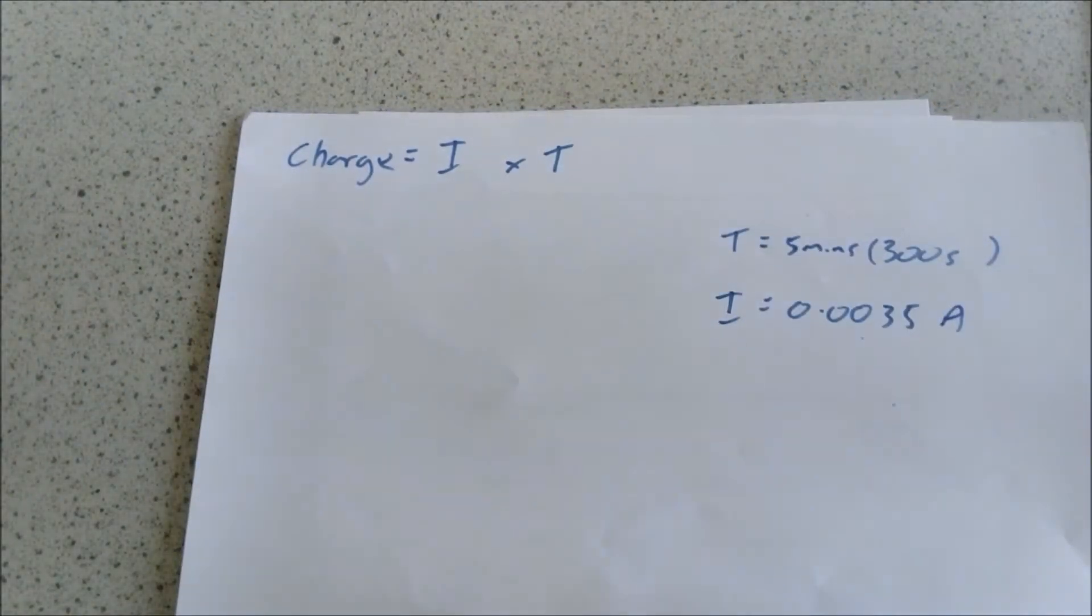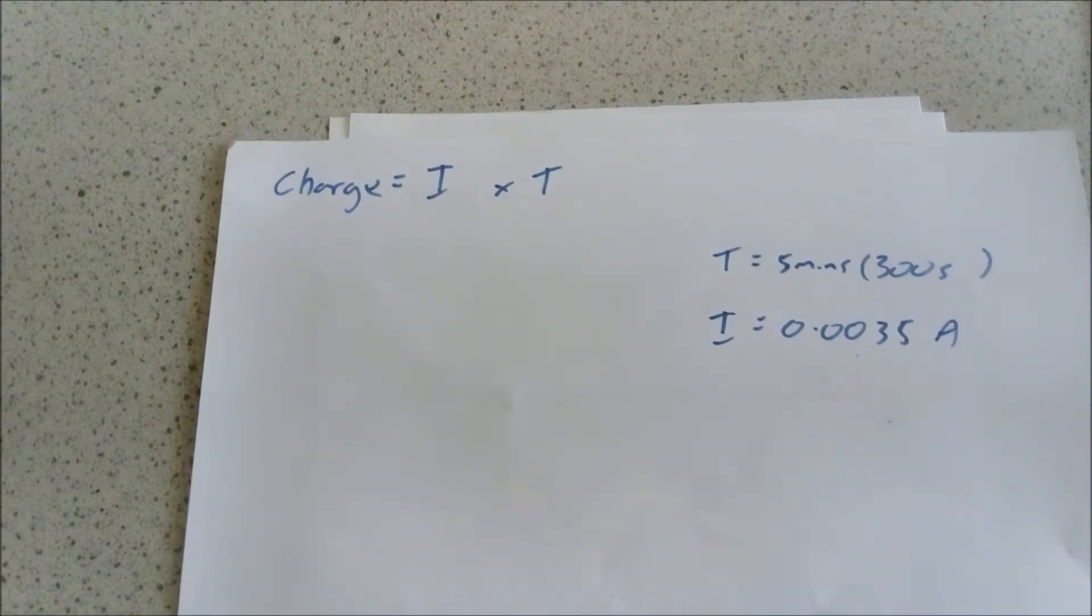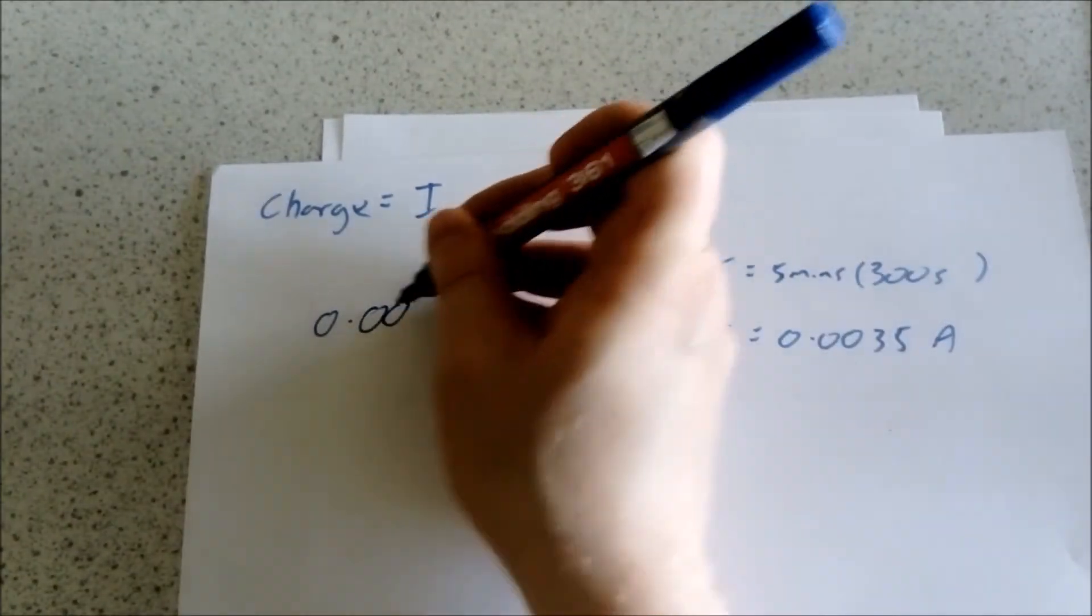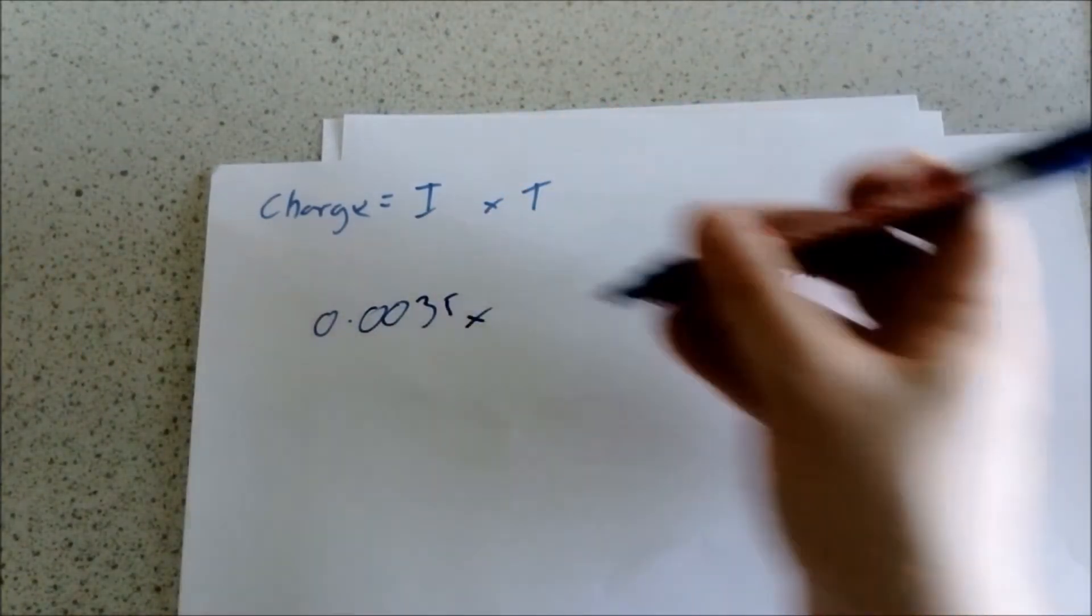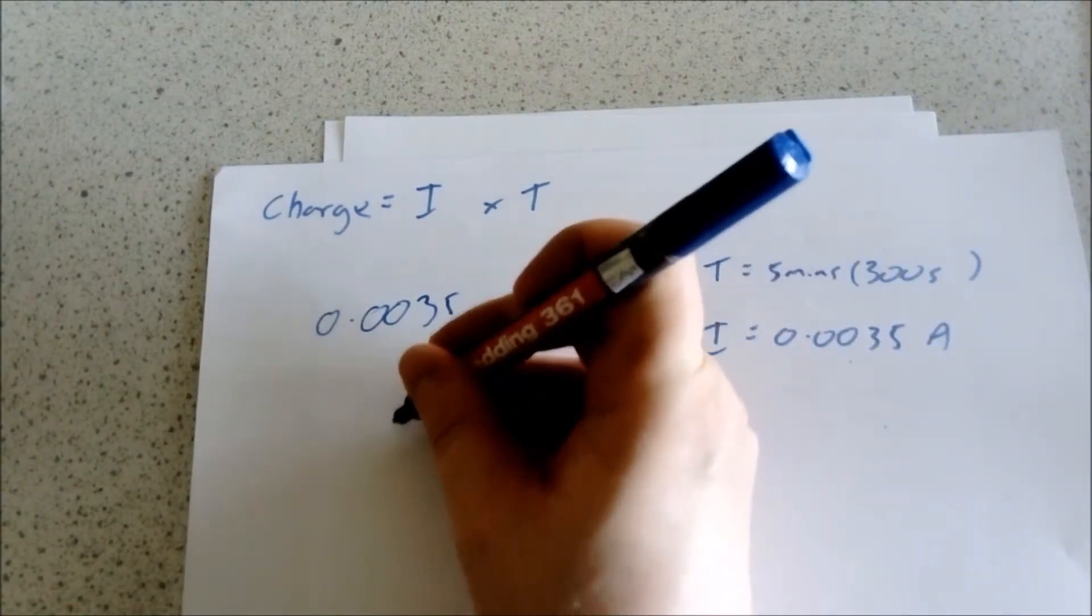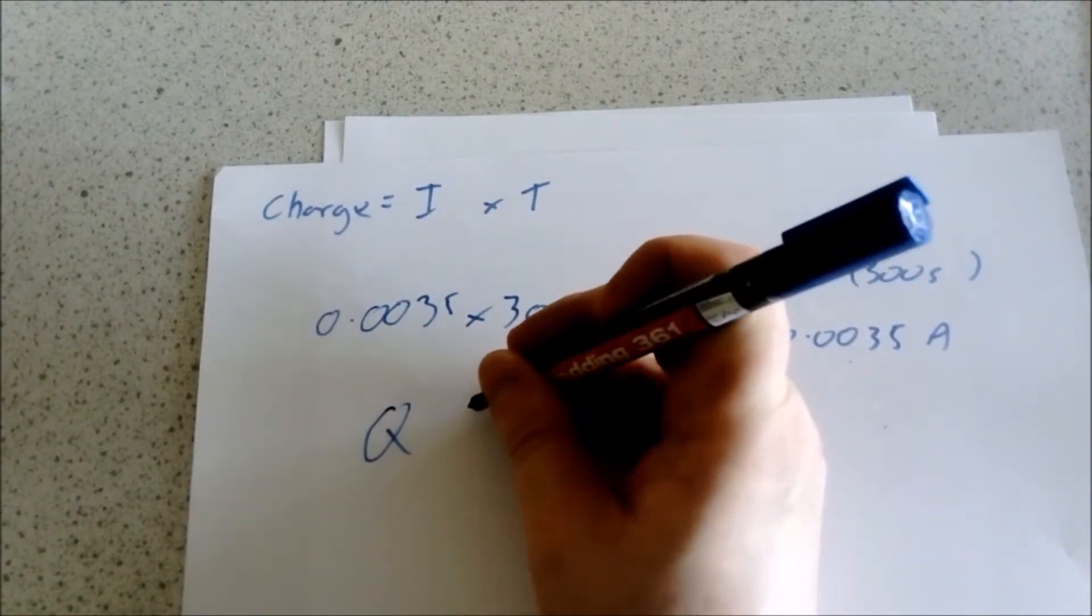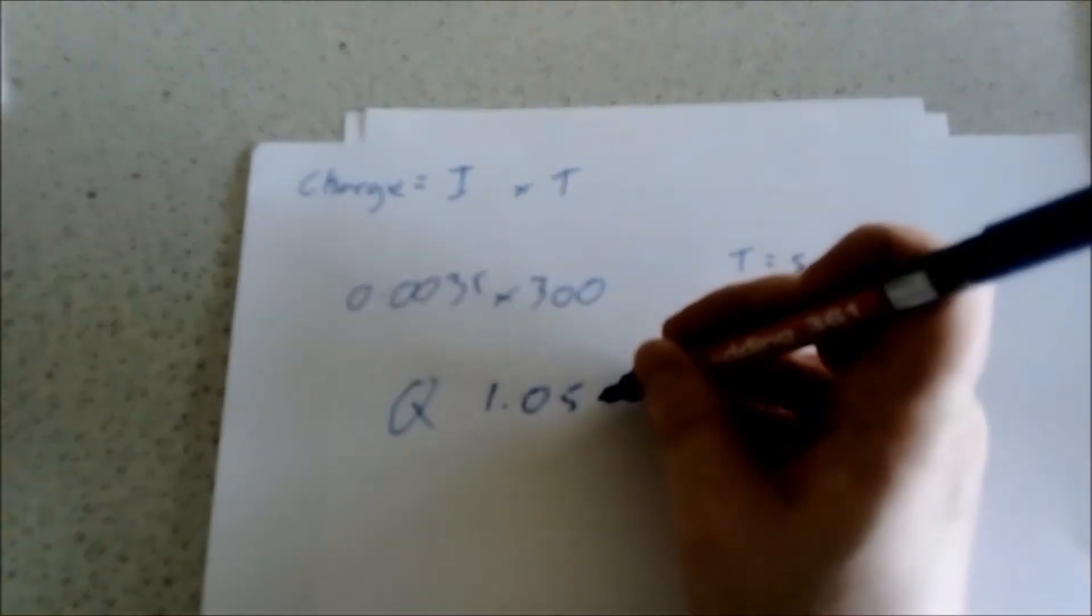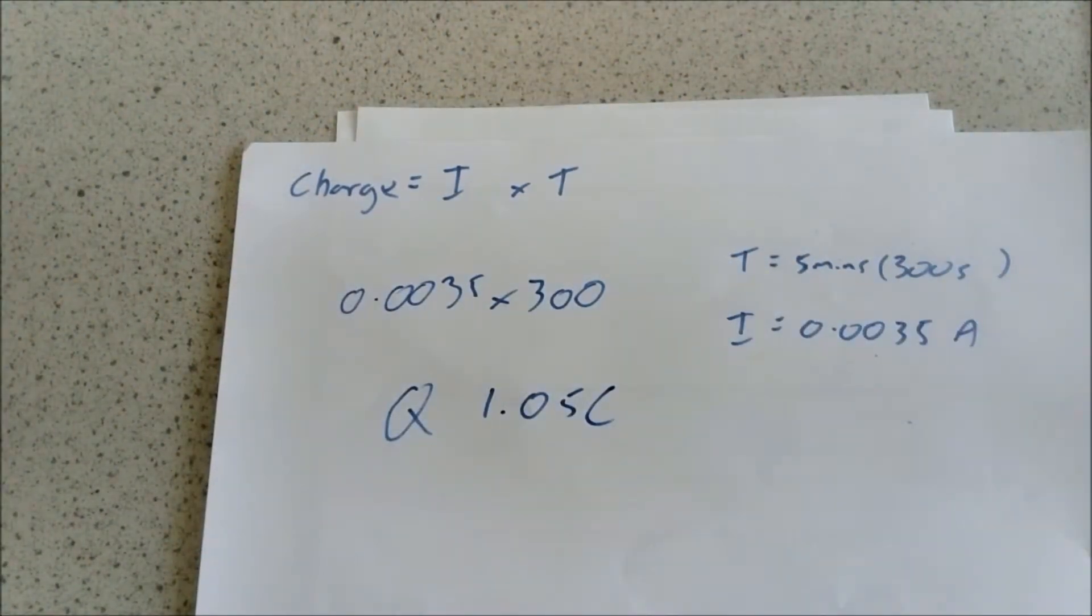So all you then do is just plug the variables into your equation, so you're going to have 0.0035 times by the time which is 300, which will give you a charge of 1.05. Remember the symbol for charge is C for coulombs.